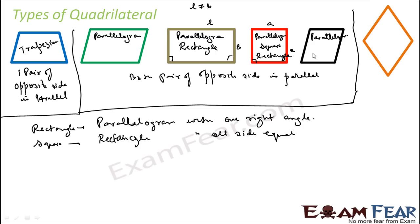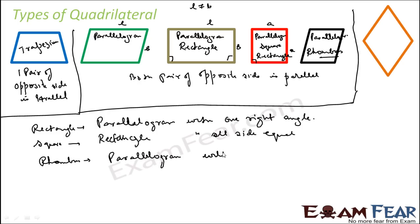This is also a parallelogram but it has a different property. The length and breadth are non-equal but this is called a rhombus. The angle need not be 90 degrees, but rhombus is a parallelogram with all sides equal. If you make the angle 90 degrees, it becomes a rectangle. If you make the angle 90 degrees and also make length and breadth the same, it's a square. In a parallelogram, if you just make the length and breadth the same, it becomes a rhombus.